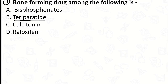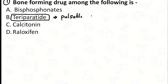The answer is teriparatide. Teriparatide is a derivative of parathormone — it's a recombinant parathormone but with fewer units. It is given in a pulsatile manner, which stimulates osteoblasts and thereby causes bone-forming action, also called anabolic action.